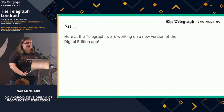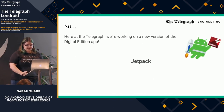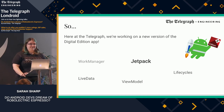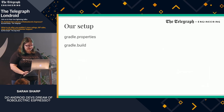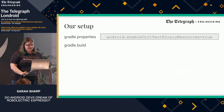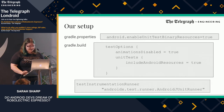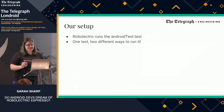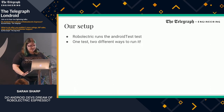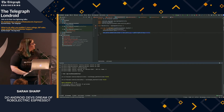Here at the Telegraph, we're working on a new version of the Digital Edition app, which means we can try some of this stuff out. We've made an effort to try and use some of the Jetpack tools: view models, lifecycles, live data, work manager, and Android test, to name a few. So let's try it. For the setup of getting the Android test runner to work, we have to enable a few things. The test binary resources have to be set in the Gradle properties — this is currently experimental, which is a known warning. The Gradle build needs to include those resources, the runner needs to be set to the Android JUnit runner, and obviously dependencies as well. Here's going to be the optimistic point where I attempt to demonstrate this.